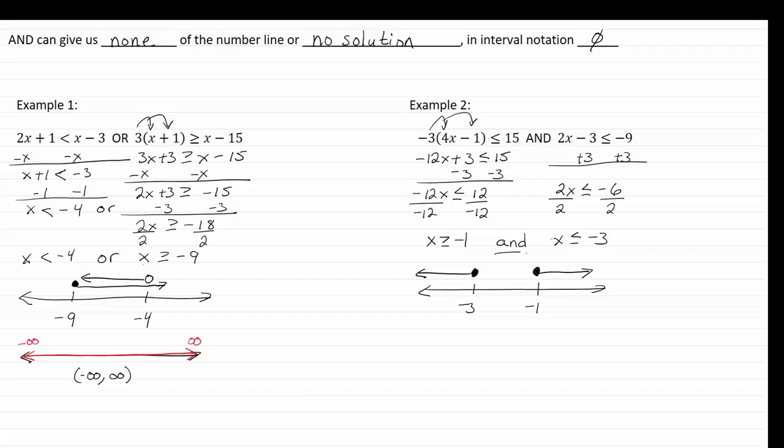Now remember with AND, we have to have an overlap. We have no overlap, so that means our graph is just empty. There's nothing on it, and we either say that this is no solution or it's the empty set.